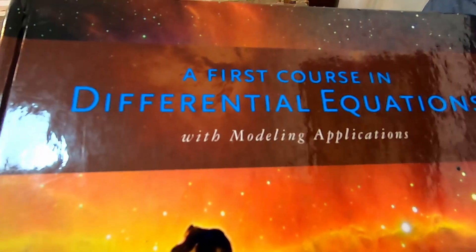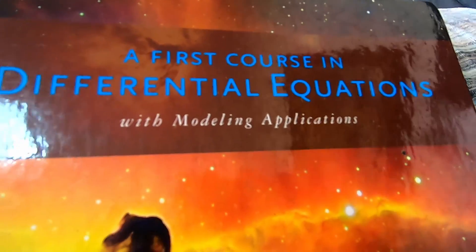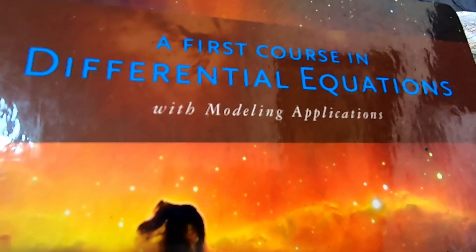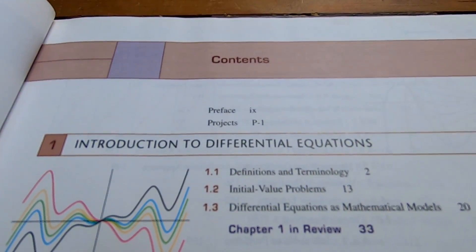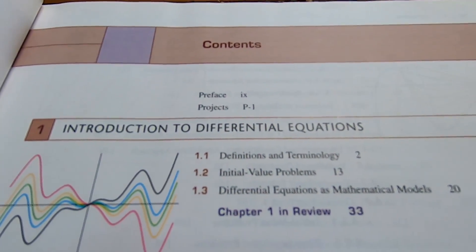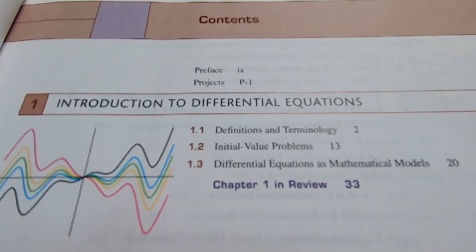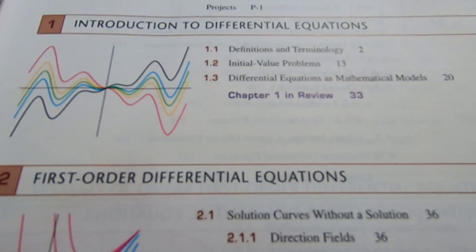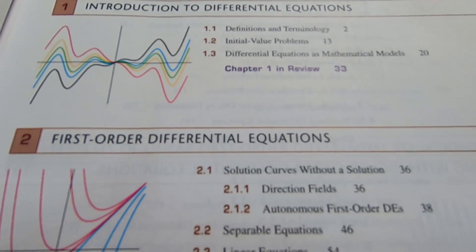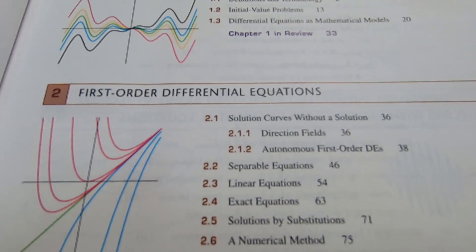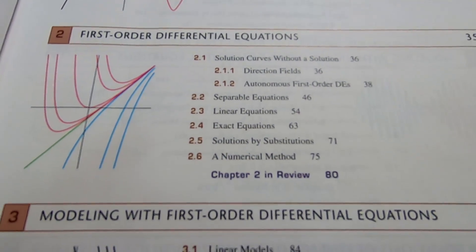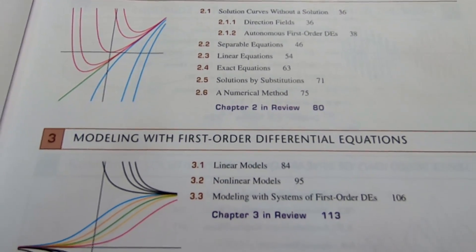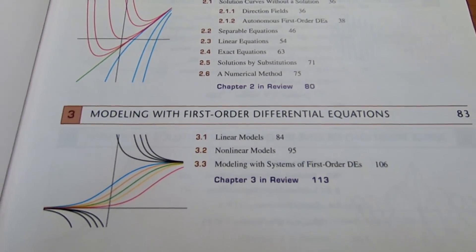This next book is the book by Zill, A First Course in Differential Equations. This is the table of contents, and I'll just talk as I go through it briefly. It's very similar to the Andrews book. All of these books have similar material. It's just the way things are explained is different.